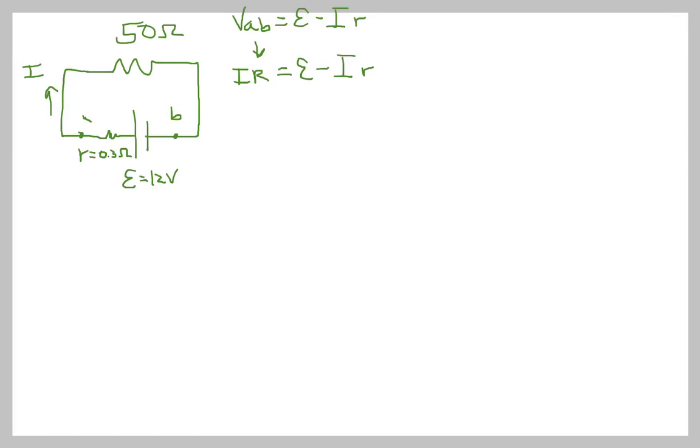And so IR is equal to the EMF minus the current times the internal resistance. And we can do a little bit of simplification and sort of bring E to one side and say that E is equal to I big R plus I little r. E would therefore be equal to I times R plus little r. Okay, and we're getting to where we sort of need to be. If we're trying to figure out I as the current here, this last little bit of algebra rearranging things would put it like this. I is equal to EMF over R plus little r.